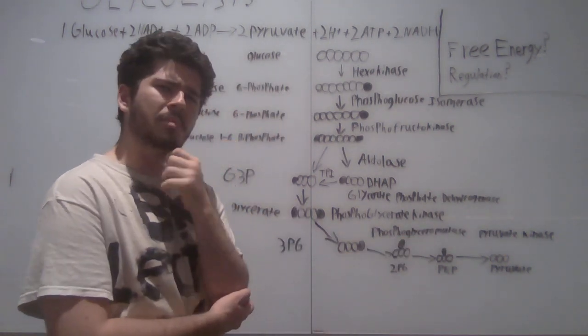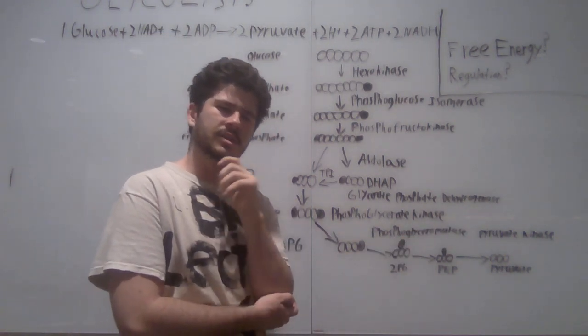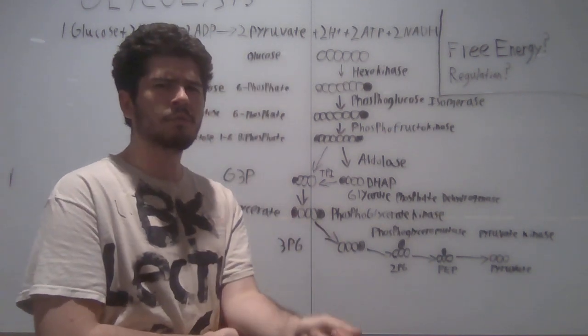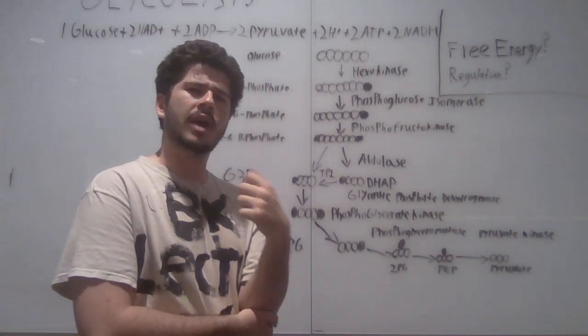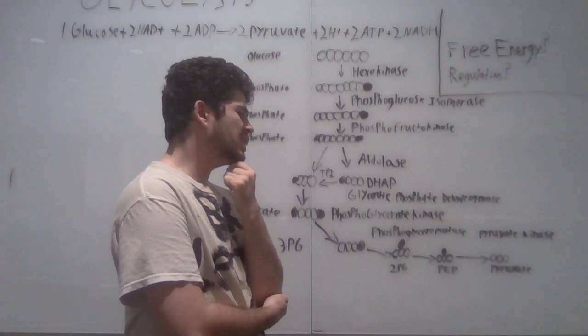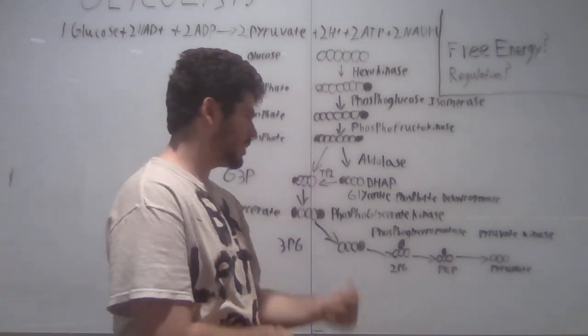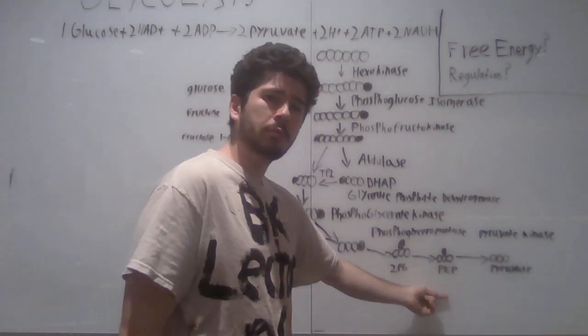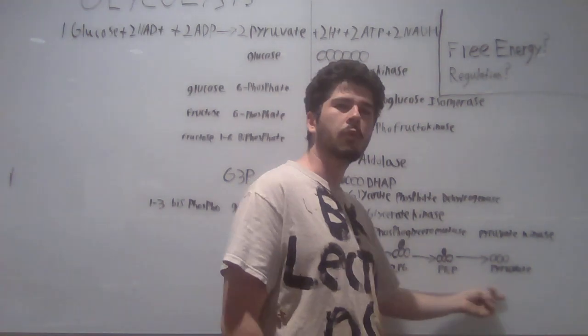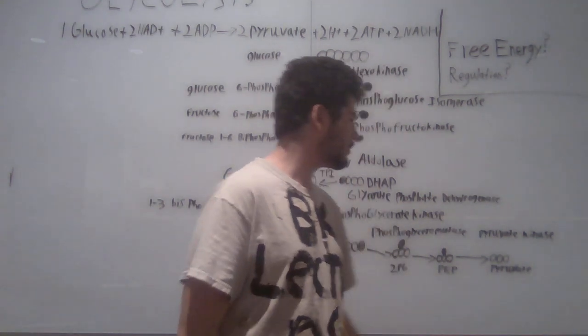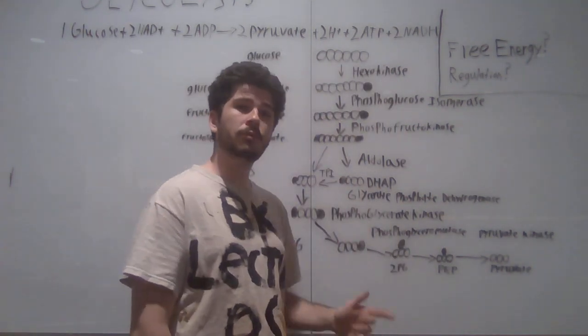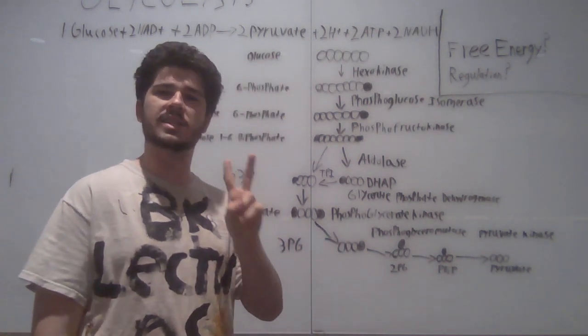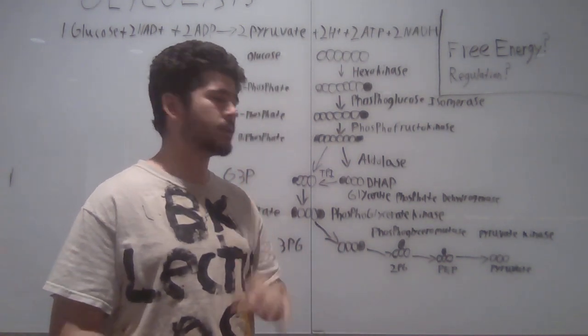Pyruvate kinase, suggesting that it's involving pyruvate and it's adding or subtracting a phosphate group. With this, we can see that it's taking a phosphate group off of PEP and forming pyruvate. With this, it forms an additional 2-ATP for the two molecules within the reaction.